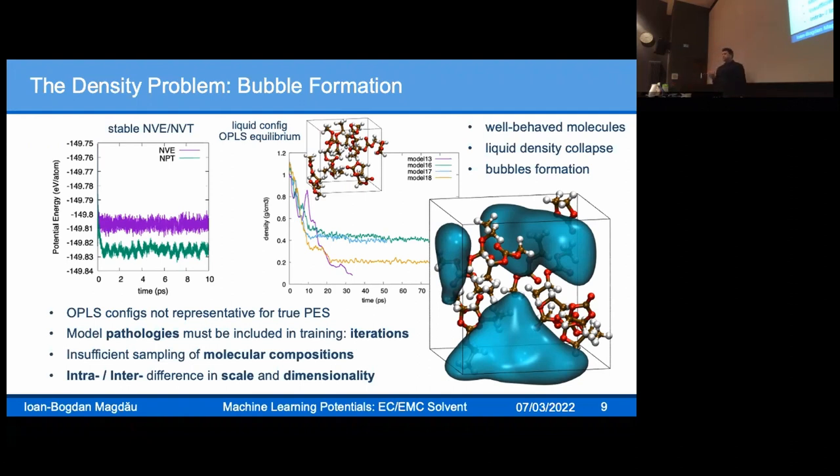But there's an additional issue. It turns out that including only equilibrium configurations does not yield a robust potential. In many cases, we find that adding quite highly non-equilibrium structures to the training set really helps to deal with some model pathologies, helping to define the boundary of relevant configuration space. At the heart of it all is this massive difference between intra and inter interaction. The loss function is really dominated by the intra degrees of freedom, which means small errors on intra can be considerable errors on intermolecular degrees of freedom.